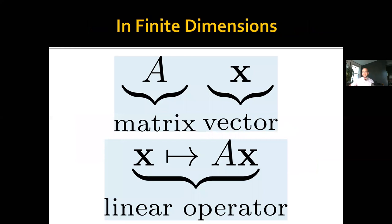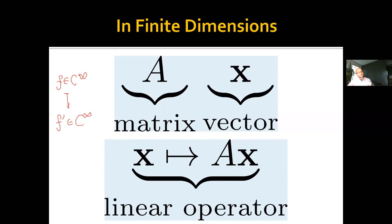In finite dimensions, there's a duality between doing linear algebra in terms of matrices and vectors versus thinking about linear operators, and these two things are basically equivalent. But in infinite-dimensional spaces, that's no longer the case. For example, a simple example of a linear operator is the operator that takes an infinitely differentiable function f and maps it to its first derivative. This operator inputs functions and outputs functions, so it's not clear how to describe it as a matrix-vector multiply. The Fourier series gives some way to do that for this particular operator.